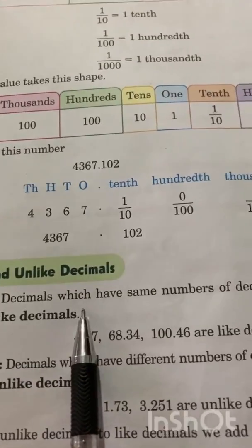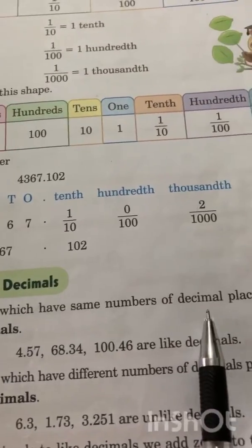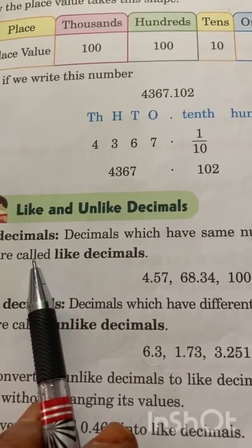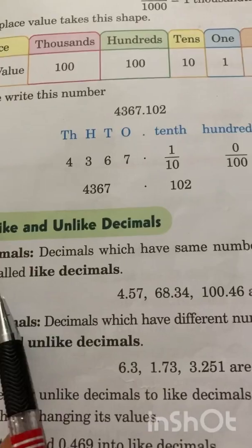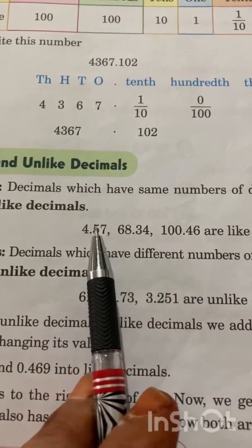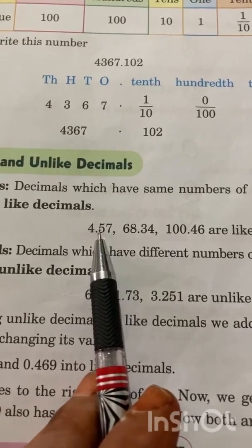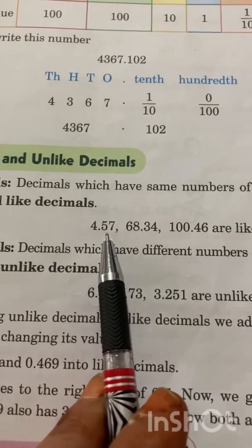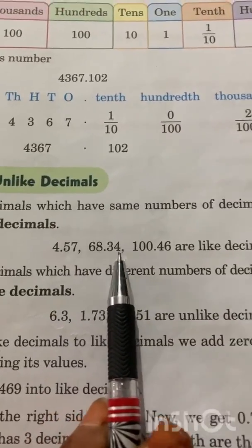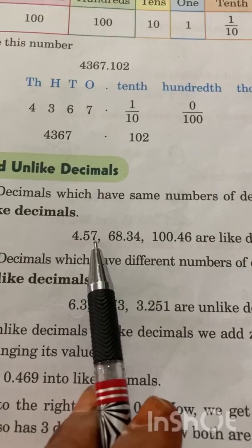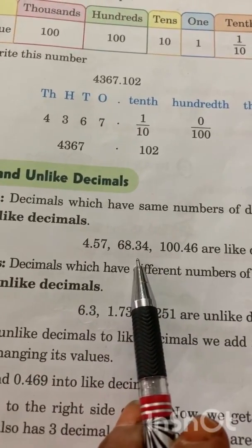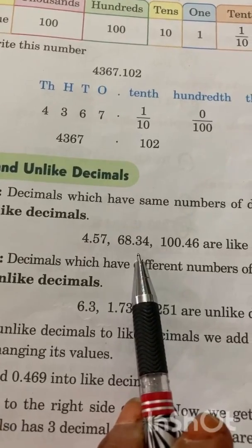Decimals which have the same number of decimal places after the decimal point are called like decimals. After the decimal, if we have the same number of digits — like 1, 2, 2, 2 — if we have the same number of digits after the decimal, then this type of decimal is known as a like decimal.